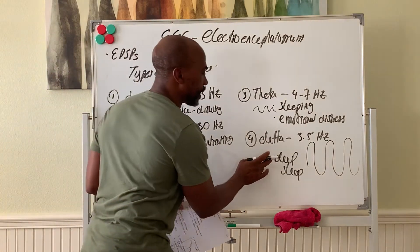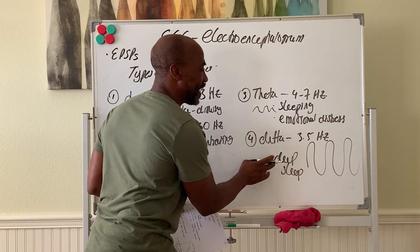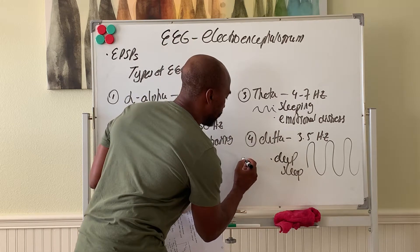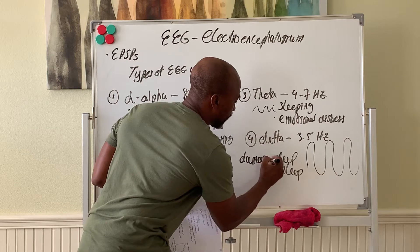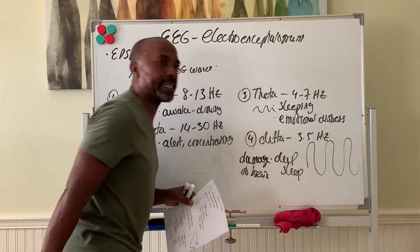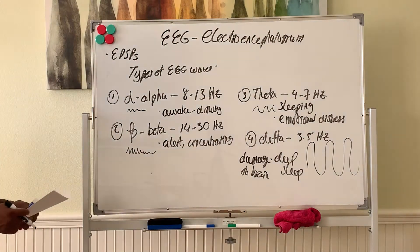Now if delta waves are present in a person who is awake, that can mean signs of brain damage, especially to the cortex. Damage to brain if present while a person is awake. The delta waves.